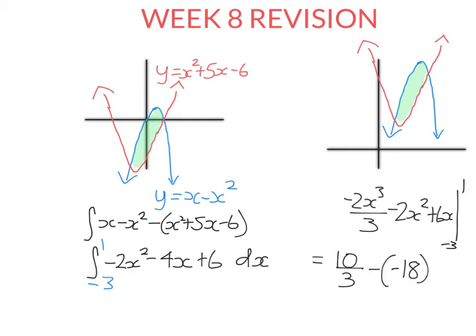So we get 10/3 plus 18, and that will give us 21.3 recurring units squared. That is the exact area in green.